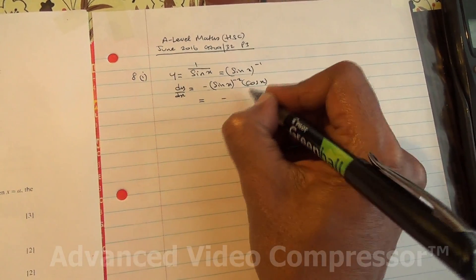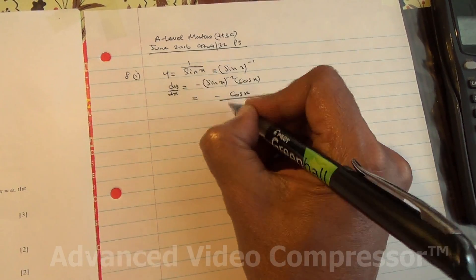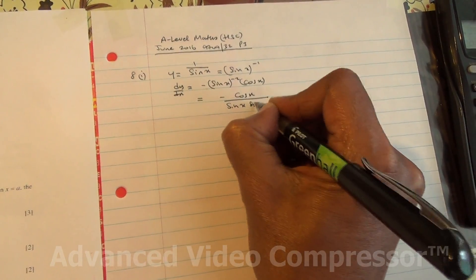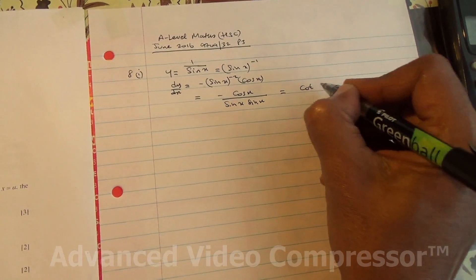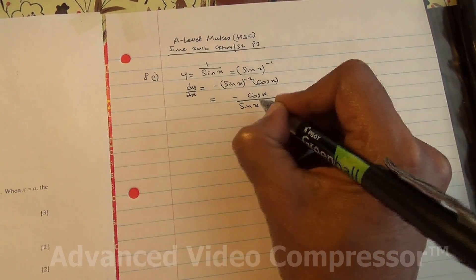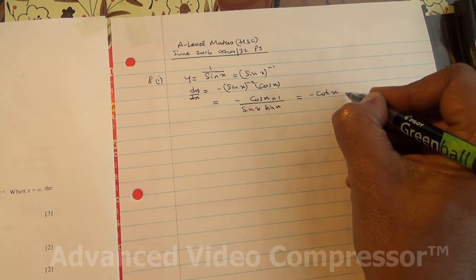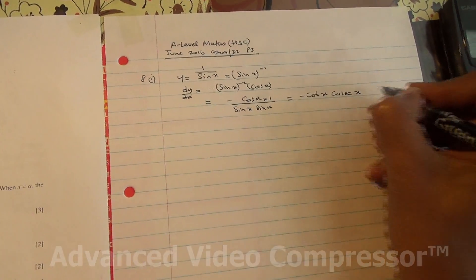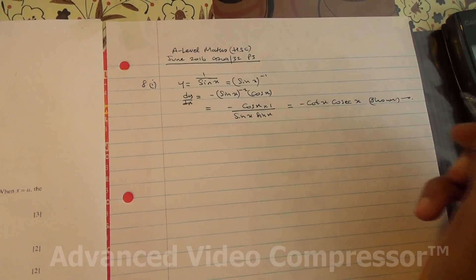We're saying that it is negative cos(x) divided by sin(x) times sin(x). Cos over sin(x) is cot(x), and we have negative, then times 1 over sin(x), which is cosec(x). So now this one has been shown.